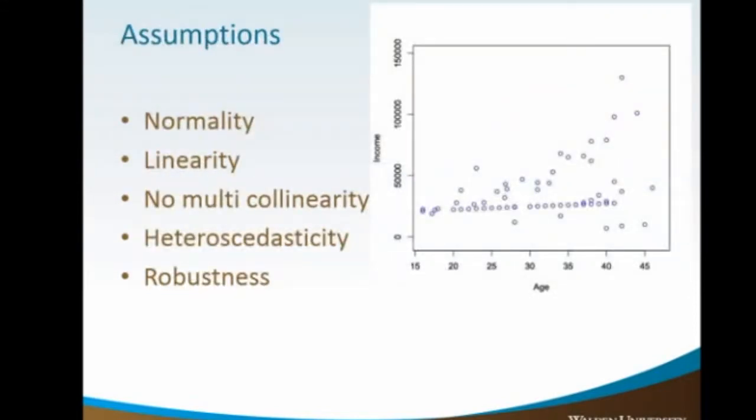Just like with univariate statistics, you need to understand the assumptions. And for the most part, the assumptions are pretty similar. Normality or having a normal distribution is an assumption in virtually all of these types of tests. Linearity, meaning that there's a linear relationship between these variables and among these variables. You want to look for, and you don't want to have a lot of multi-collinearity.